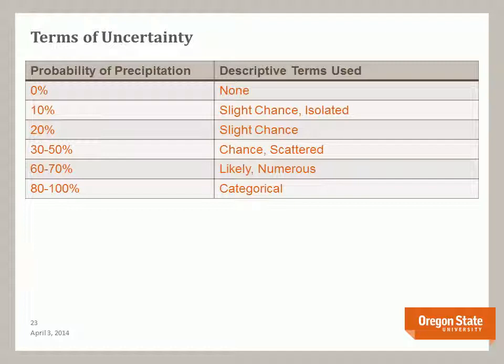There are terms you'll probably hear from your weather forecast, and here is a table from that same website. Zero percent means no chance. Ten percent means slight chance and isolated — just certain areas will get it. Twenty percent means slight chance but with greater coverage. Thirty to fifty percent means a better chance and scattered — not in every area. Sixty to seventy percent means likely and numerous, covering a large area. Over eighty percent means it's going to rain in the described area.